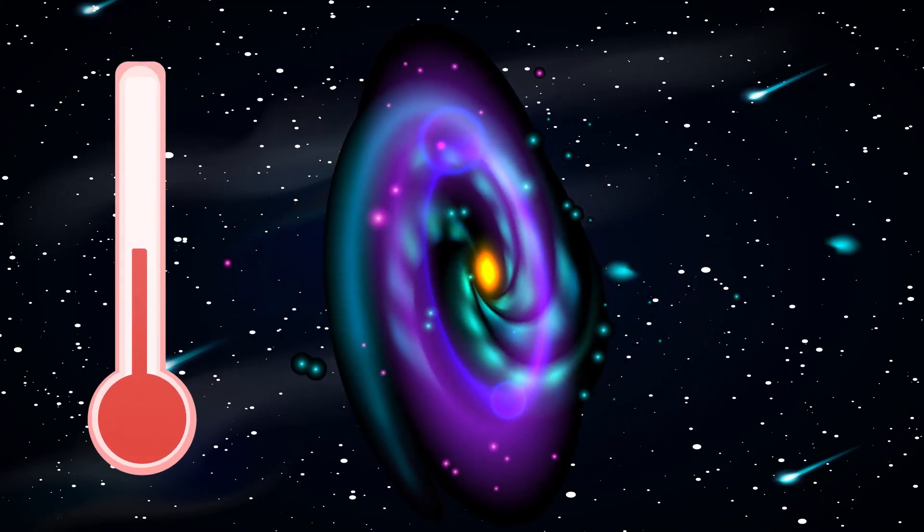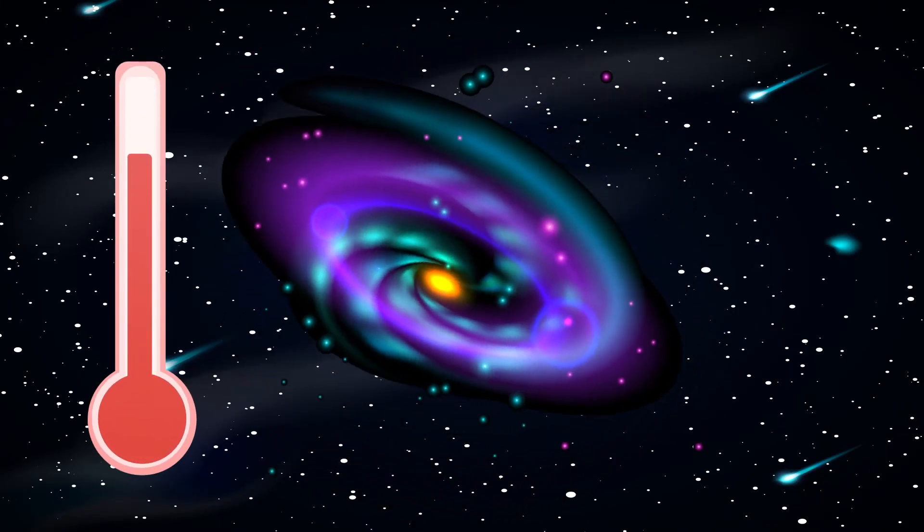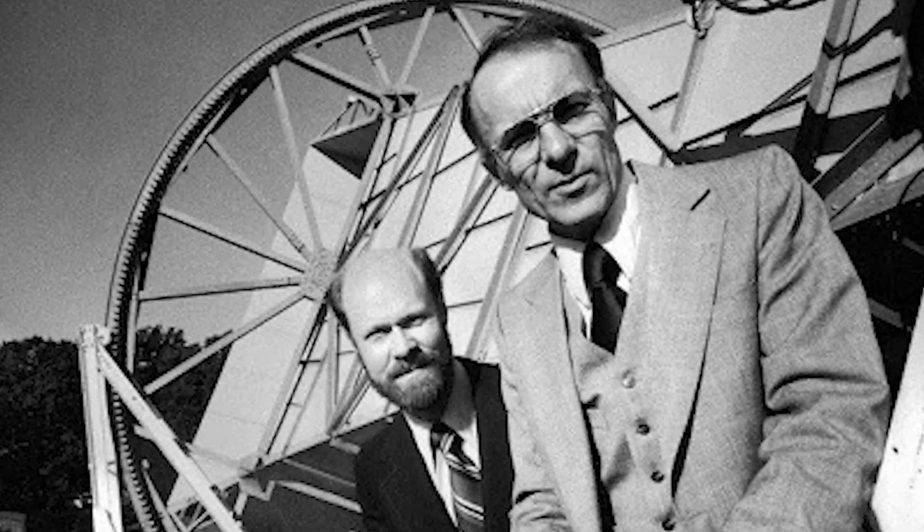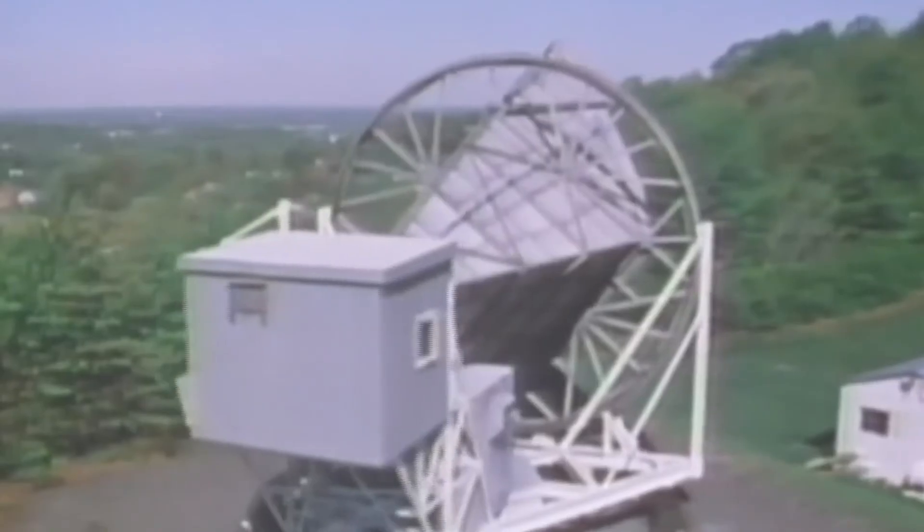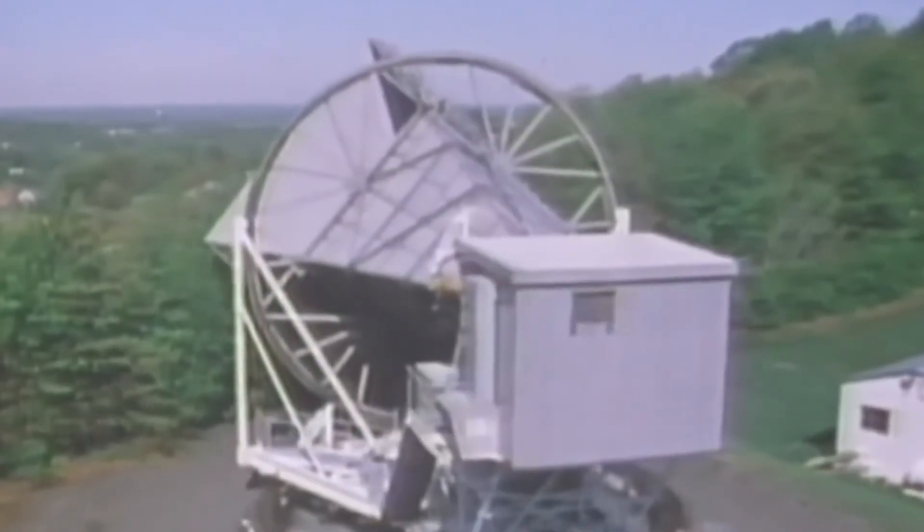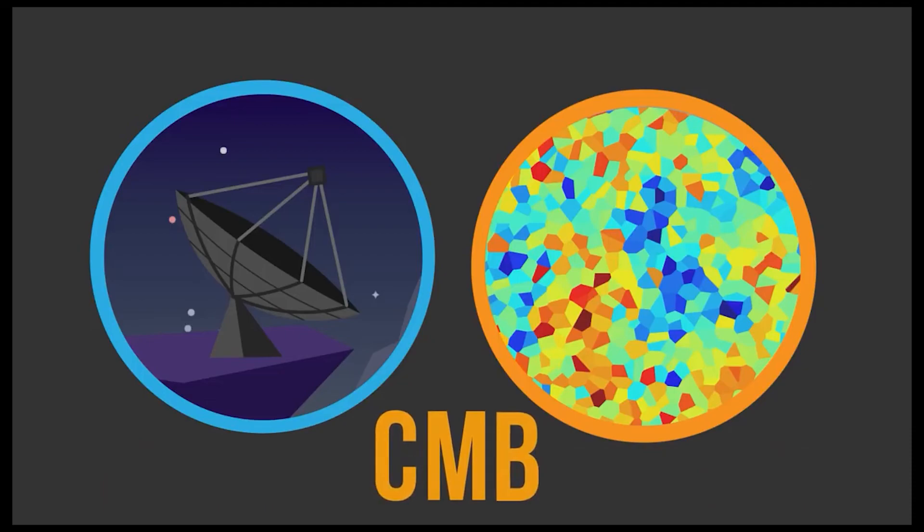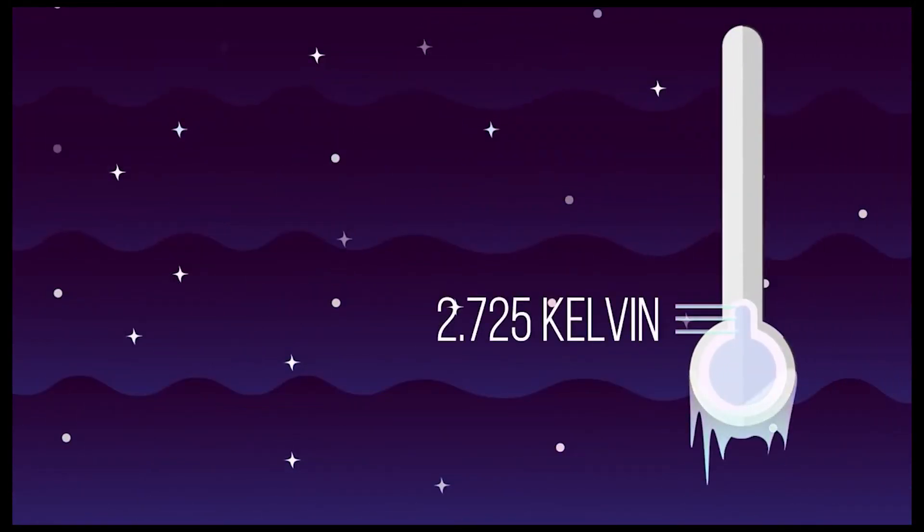Since the Big Bang says that our early universe was a very hot place that eventually cooled down, then there should be leftover radiation. Robert Wilson and Arno Penzias were the first to find this radiation while they were building radio receivers. We know that CMB radiation is not only very cold, close to absolute zero in fact, but also pretty uniform throughout the universe.